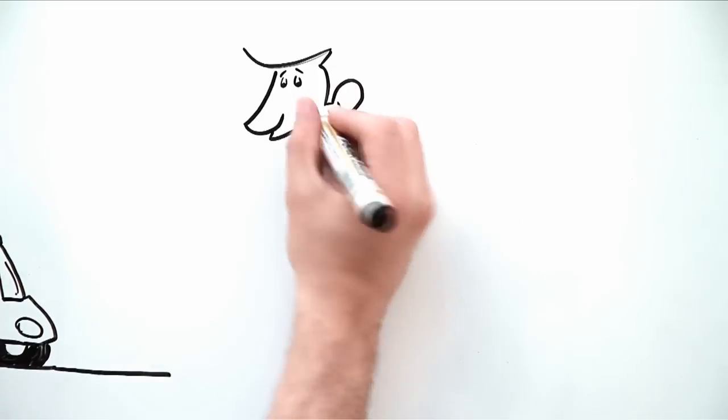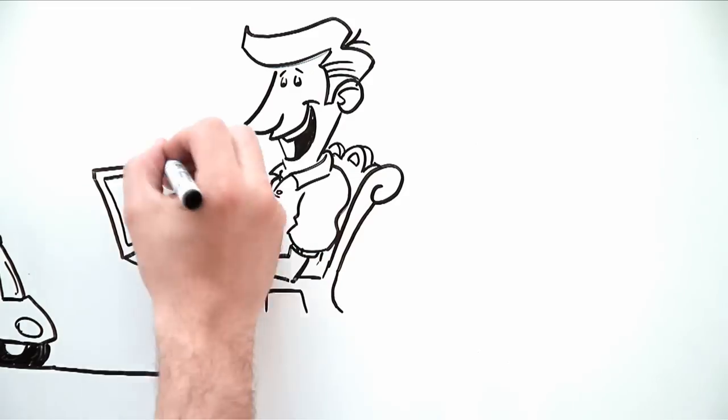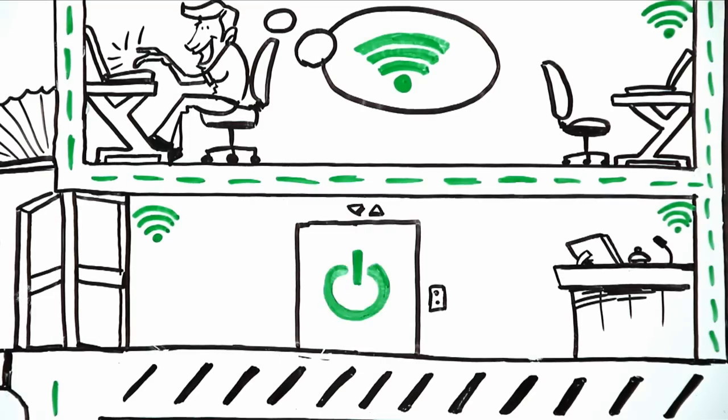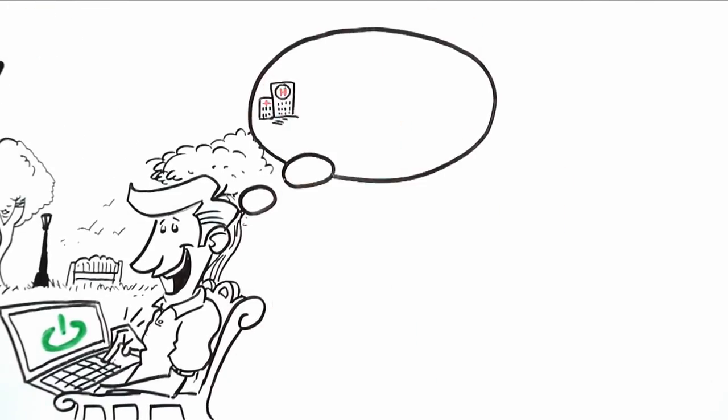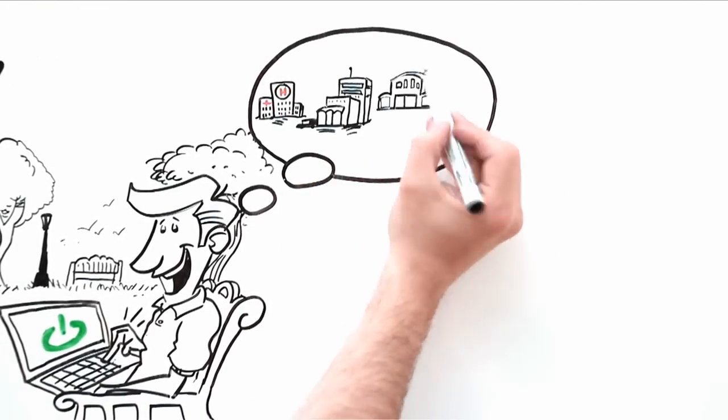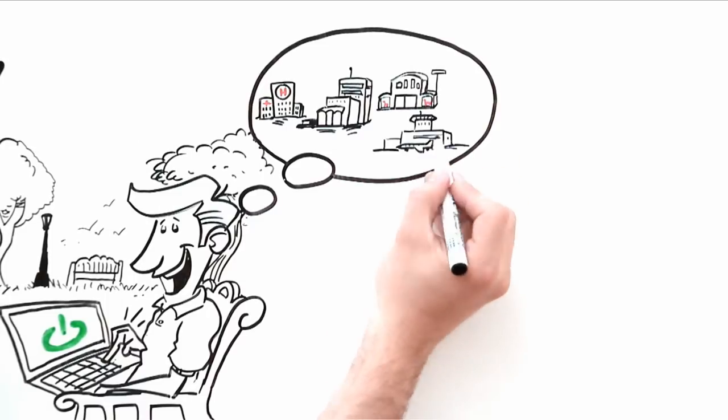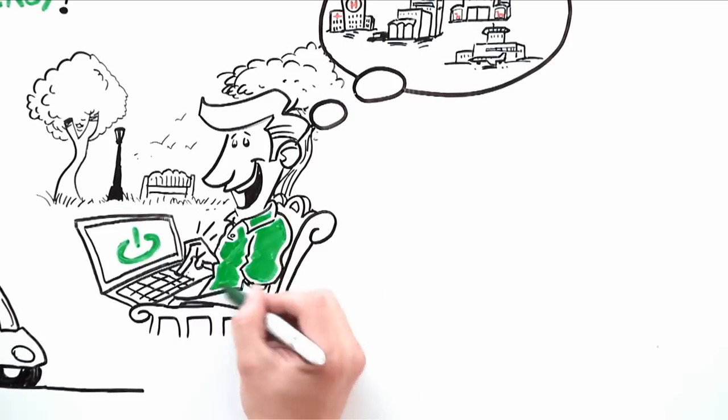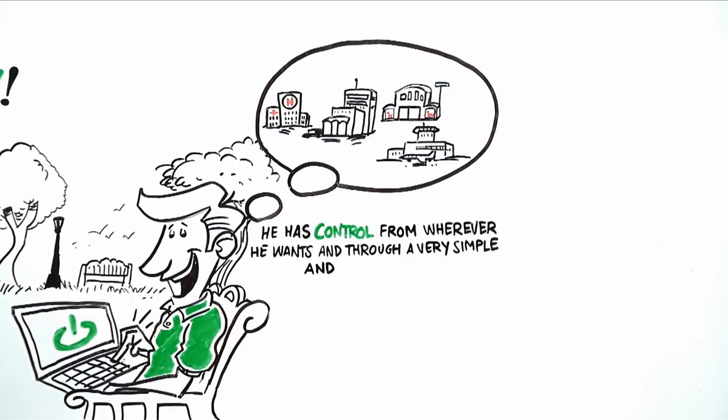And now he can control from his mobile phone who, and for what reason, can connect to the internet from in his building, or hospital, a station, a shopping centre, or in an airport. He has control from wherever he wants, and through a very simple and affordable system.